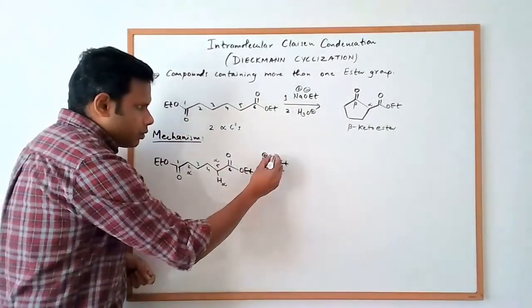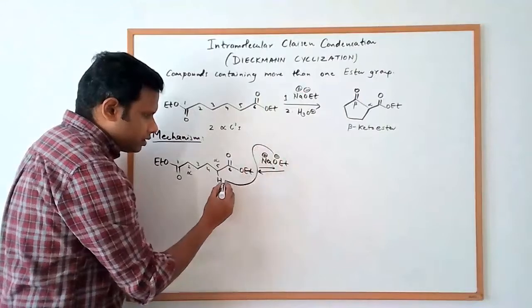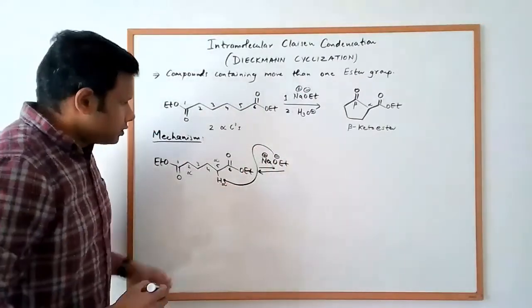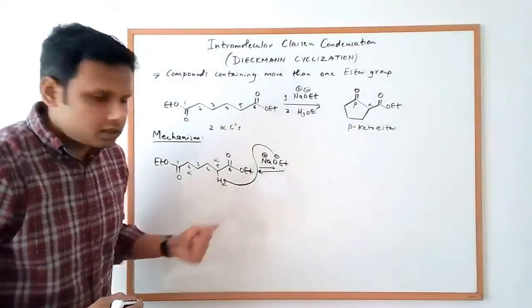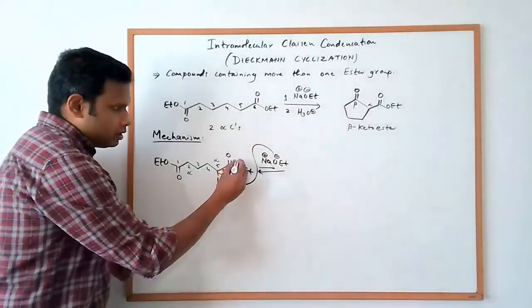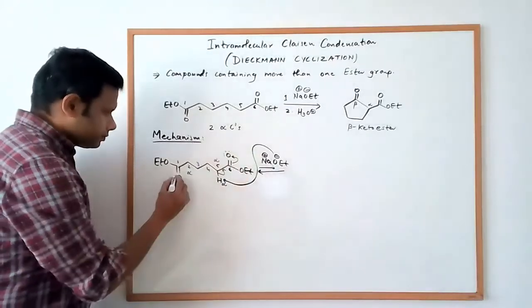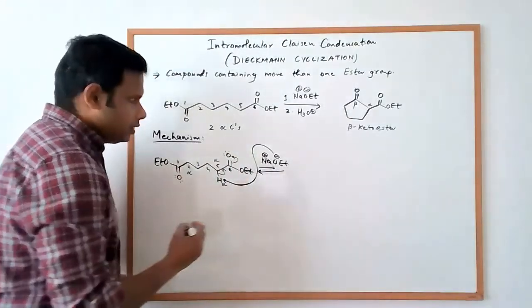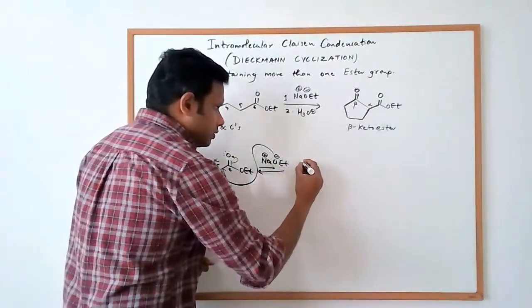And so in this particular case, it really doesn't matter which alpha hydrogen we pick, we can go ahead and deprotonate the alpha hydrogen at carbon number 5. When that happens, we're going to make the enolate, electrons would go there.